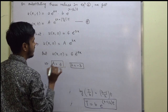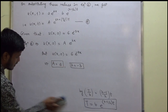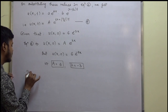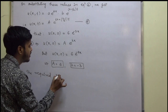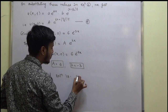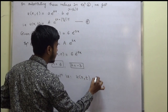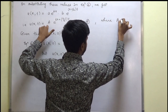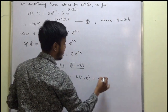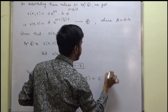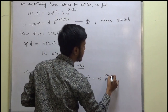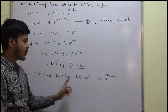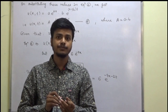Substituting A = 6 and k = −3 into equation 4, the required solution is: u(x, t) = 6·e^(−3x + (−3−1)/2 · t) = 6·e^(−3x − 2t). This is the final solution to the given problem.